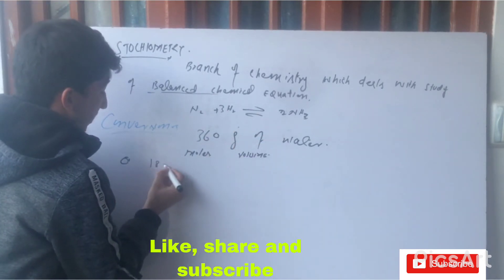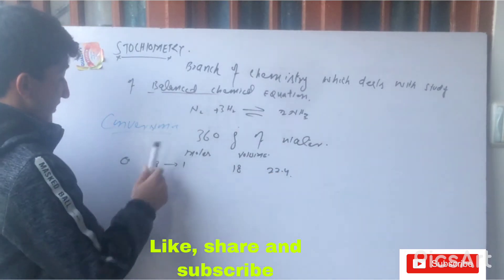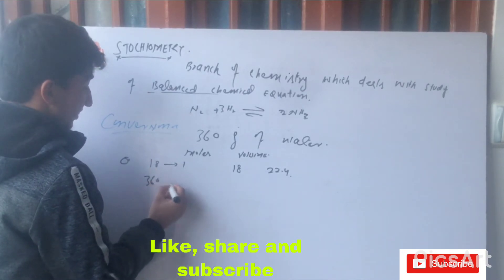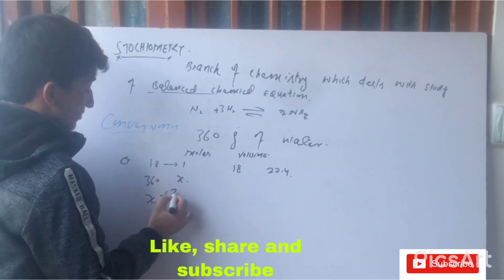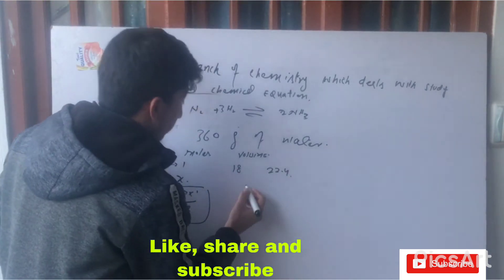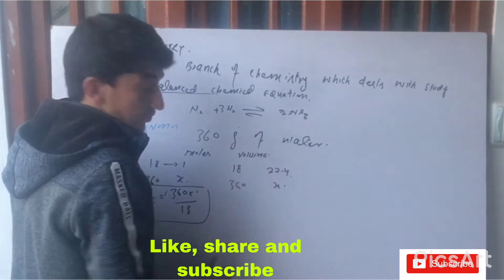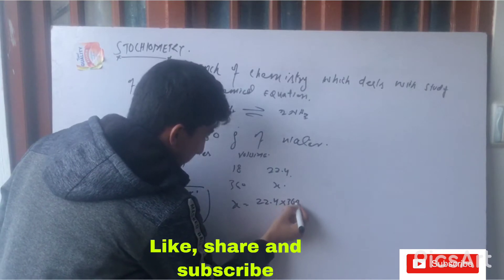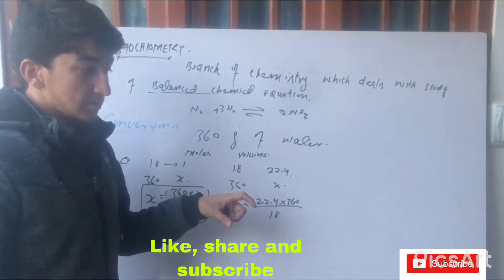Just a simple question. 18 grams contain how many moles? 1 mole. 18 grams contain how much volume? 22.4 liters. So if 18 grams contain 1 mole, then 360 grams contains how many moles? x equals 360 into 1 divided by 18. This is the valid answer. As you can see, 18 grams contains 22.4, then 360 grams contain how much volume? The volume occupied by 360 grams of water will be x equals 22.4 into 360 divided by 18.